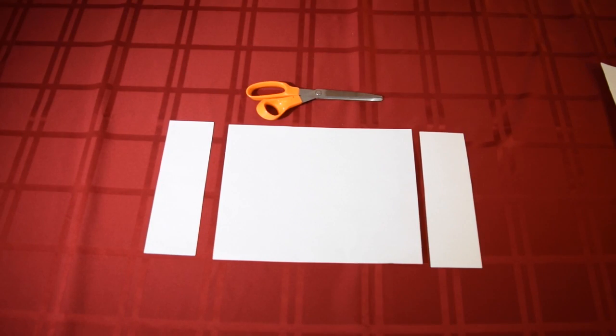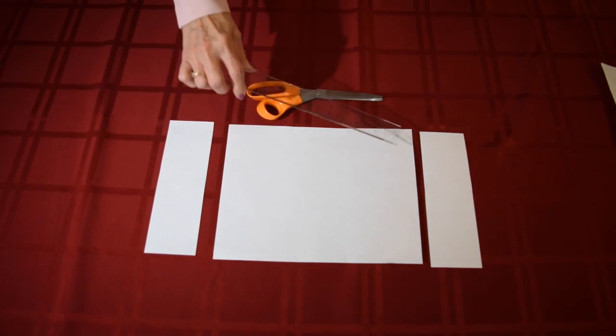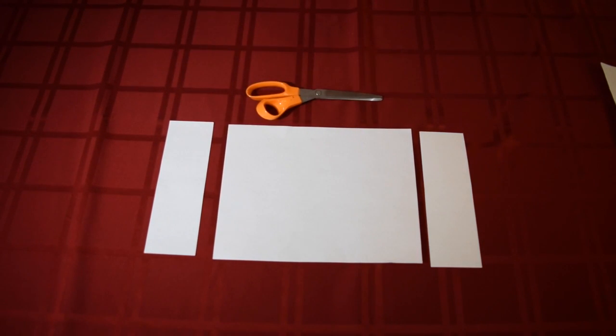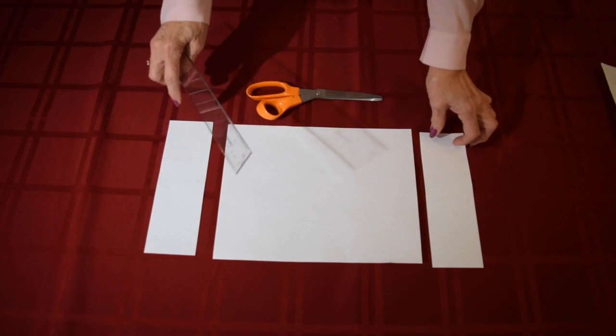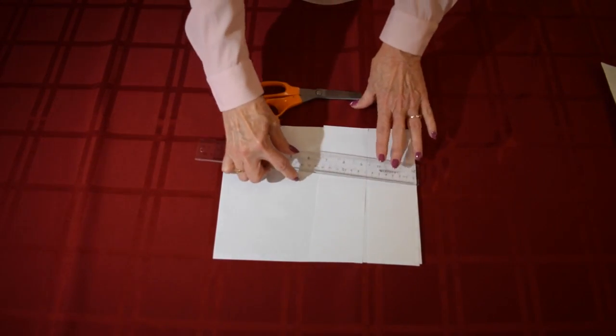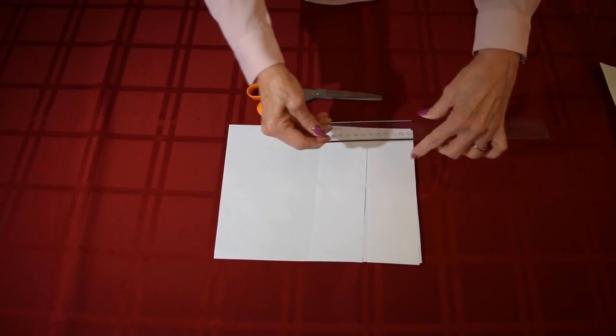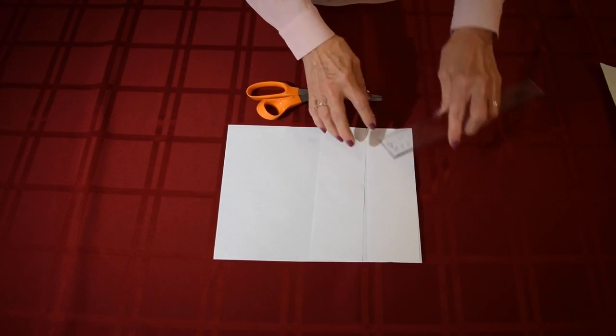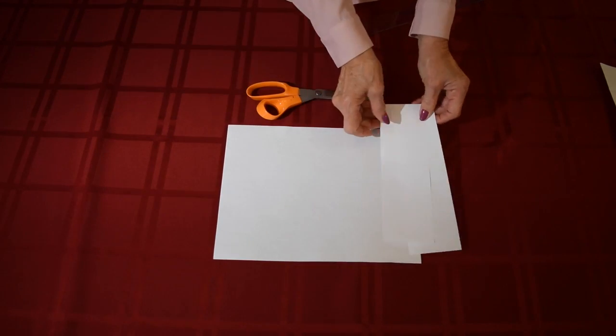The supplies you need for this project are a piece of 8 1/2 x 11 copy paper, a half sheet that you have cut in half so into 2 3 quarter inch pieces, and we start by doing some folds.